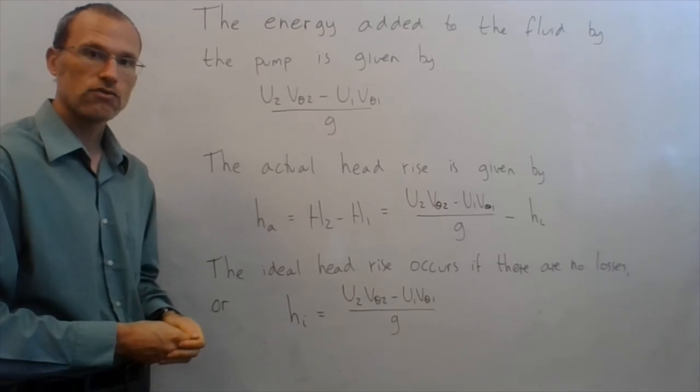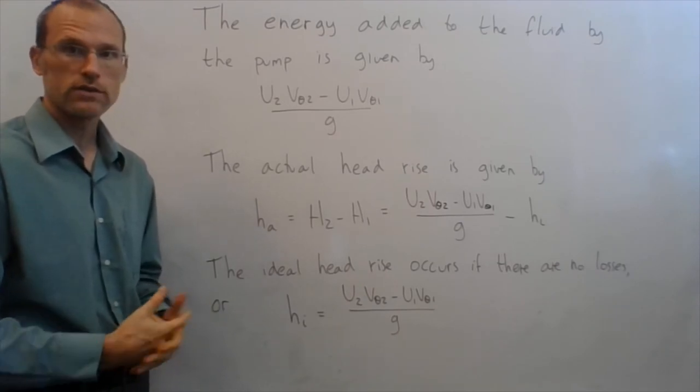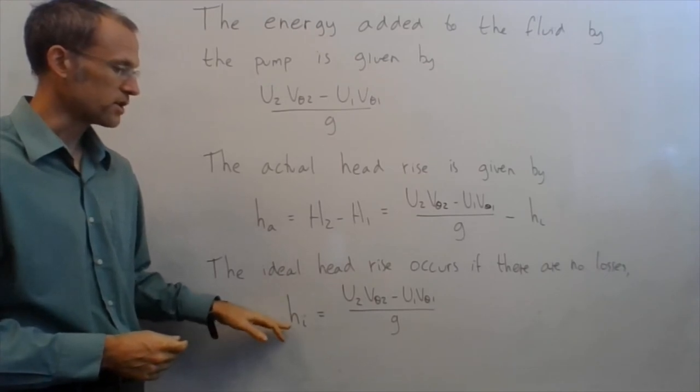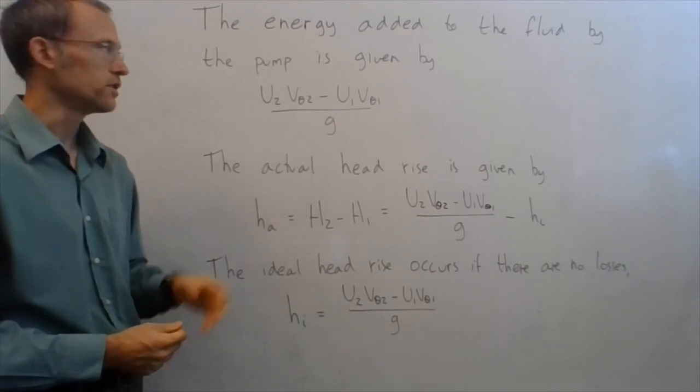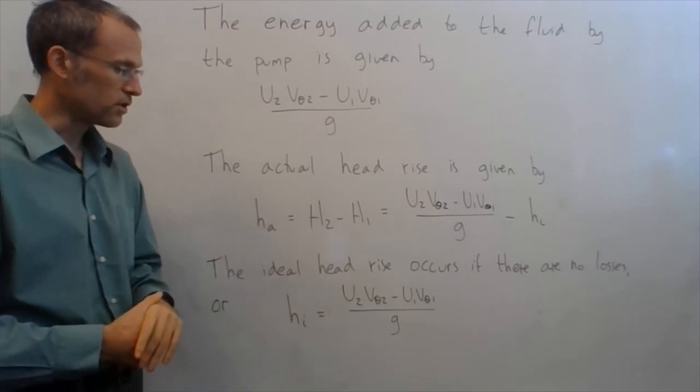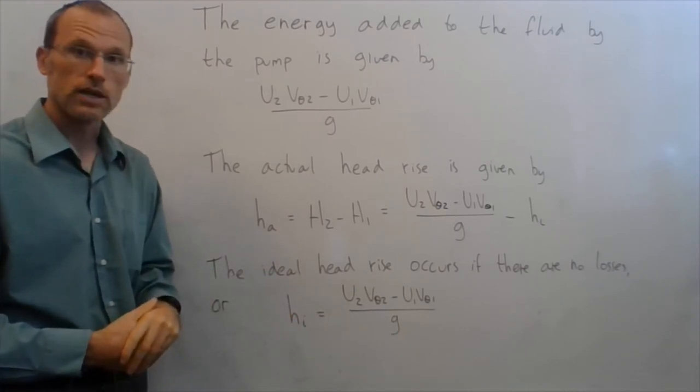In the ideal case, I have an ideal head rise, where there are zero losses, so zero losses just means hl is zero, so my ideal head rise is just equal to the energy being put in, so h_i is u2 V theta 2 minus u1 V theta 1 divided by g.